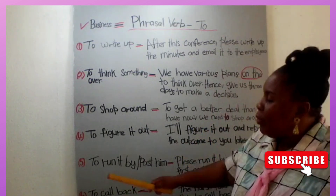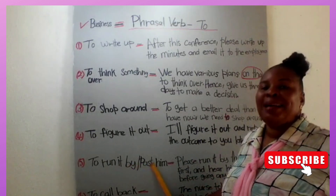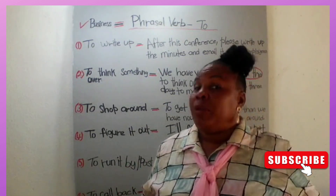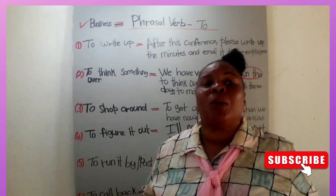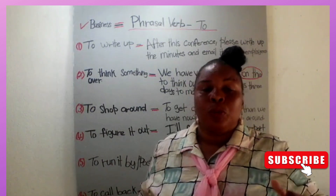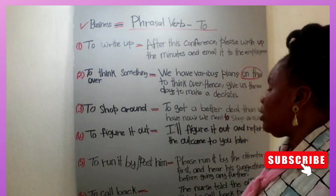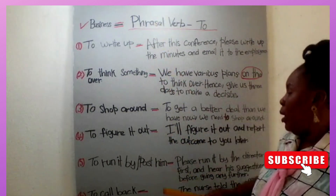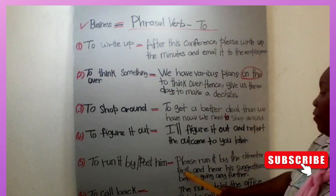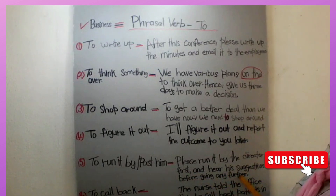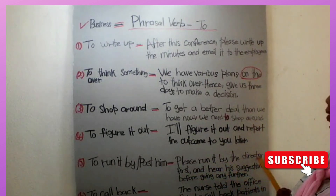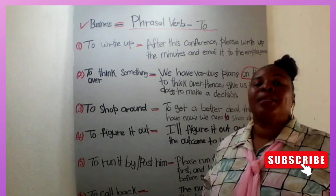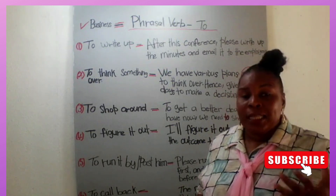Number five: to run it by or past someone. You might be working on a project and hit a bump, and someone says you have to run it by or past your supervisor before you go any further. You need someone else's input. The sentence: 'Please run it by the director first before going any further.' Someone is advising you to tell the director about it and ask questions before proceeding with that project.